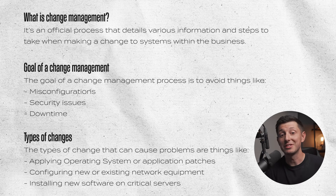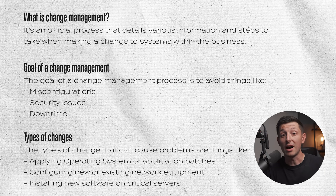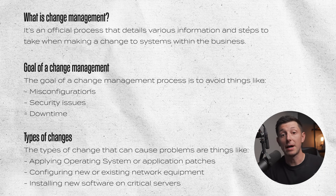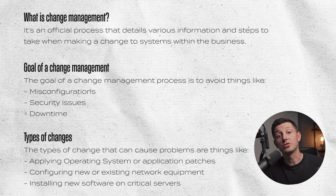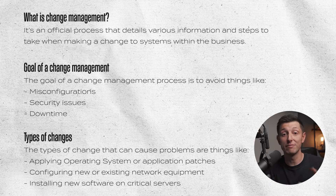The goal of the change management process is to avoid things like misconfigurations which could cause systems to stop working properly, security issues being introduced either directly or indirectly due to the change, or downtime and outages — like a silly person rebooting a firewall and taking down the internet. The types of changes that can cause these include applying OS or application patches, configuring networking equipment, and installing new software on critical systems.